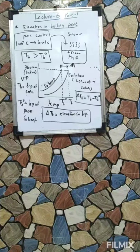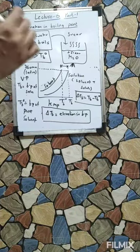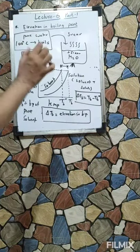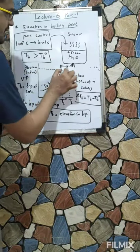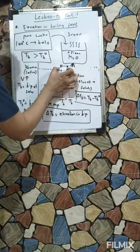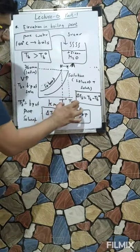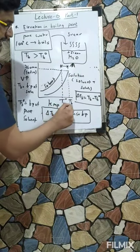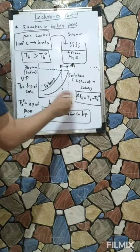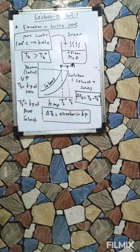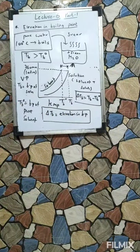So the formula is: delta Tb equals Tb minus Tb°. This is the concept of elevation in boiling point. It is a very easy concept. Delta Tb is the elevation in boiling point and it is always positive.